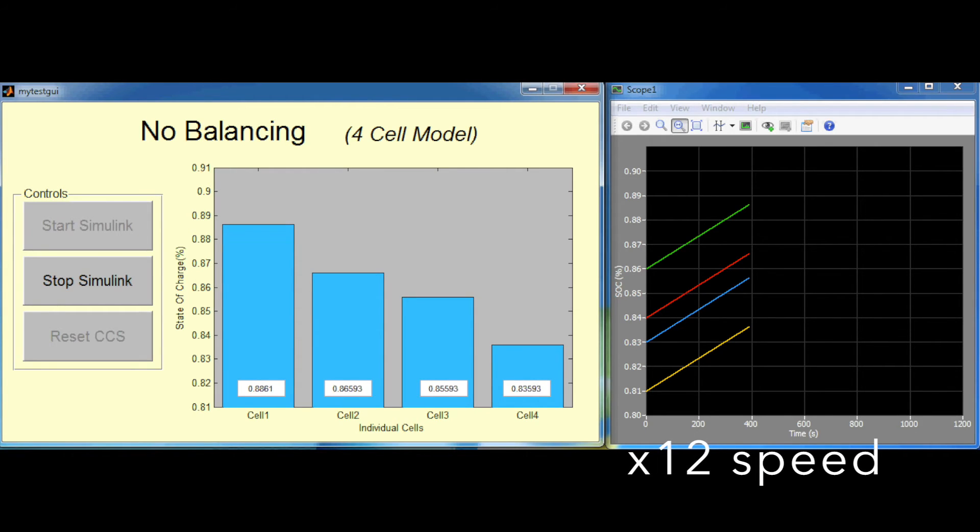Therefore, to avoid over-voltaging the cells, charging is limited by the cell which has the highest SOC, which in this case is cell 1. The pack then can never be fully charged to its rated capacity since most of the cells will not be able to reach 100% SOC.